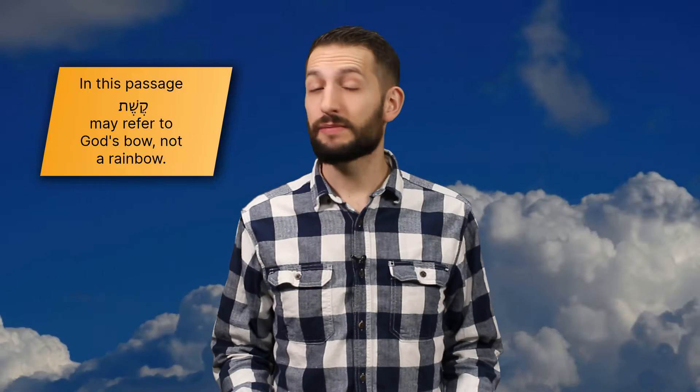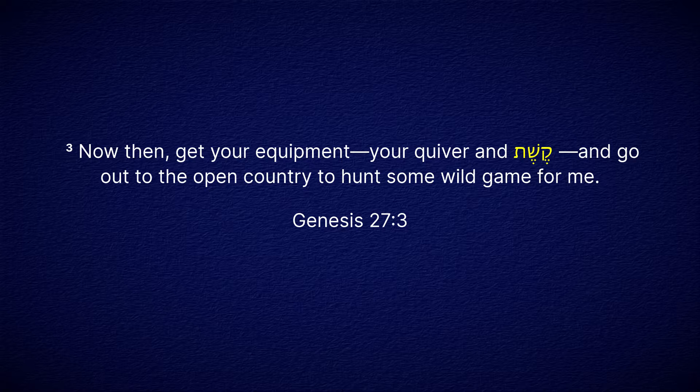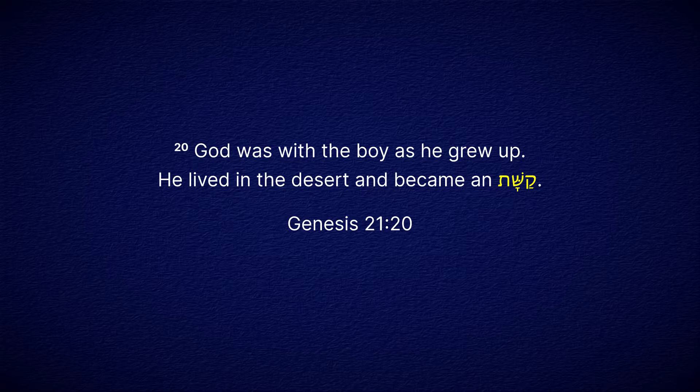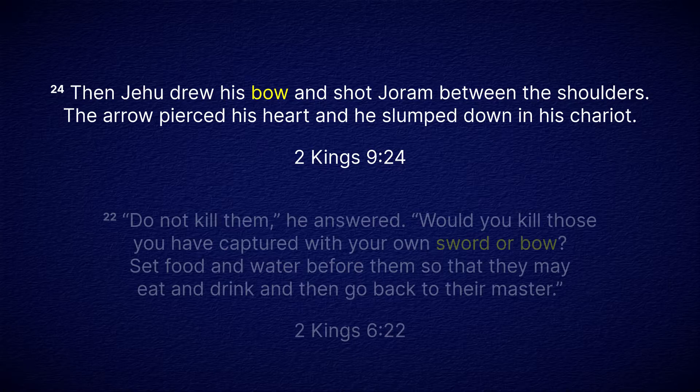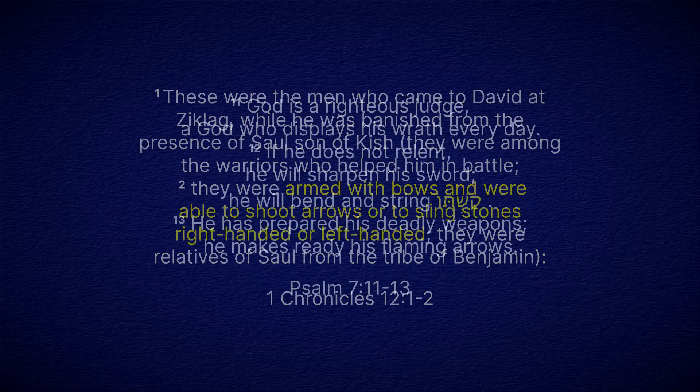For one, this is by far the most common usage of the word throughout the rest of the Bible, especially in Genesis. Isaac tells Esau to get his quiver and keshet and hunt him some game in Genesis 27. Ishmael is referred to as a bowman, using the same word. The bow can refer to either a hunter's bow or a warrior's bow. Human kings use bows, and they're paralleled with their swords. Some great warriors are noted for their bow skills.